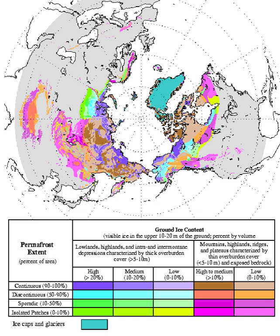Ground ice is not always present, as may be in the case of non-porous bedrock, but it frequently occurs and it may be in amounts exceeding the potential hydraulic saturation of the ground material. Permafrost accounts for 0.022% of total water on Earth and the permafrost region covers 24% of exposed land in the Northern Hemisphere.